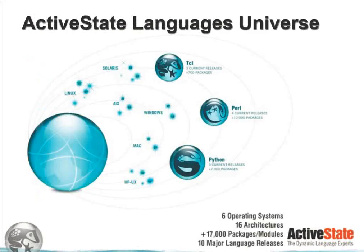So a little bit about the languages universe that ActiveState focuses on. Our stacks in Perl, Python, and TCL cover all of the named platforms — six operating systems, 16 different architectures considering 32 and 64-bit chipsets, 17,000 additional packages and modules available through things like the Teapot for TCL and PPM for Perl, all across 10 major language releases that are currently active. And we've been doing this for over a decade.